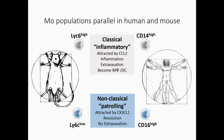So the Ly6C high and CD14, which are around 85% to 90% in humans, are actually released in response to inflammation. So they rely on CCL2, which causes their release from the bone marrow. And then they travel to the tissue, where they extravasate and form macrophages and dendritic cells.